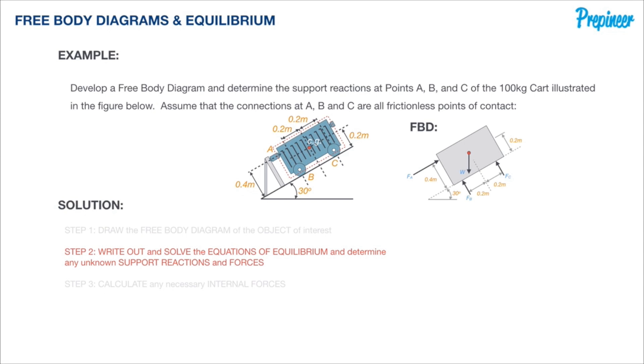Now we can go on to step two of our process where we will write out our equations of equilibrium and determine any unknown support reactions. For a two-dimensional problem, there's three equations of equilibrium: the sum of all the components in the X direction must sum to zero, the sum of all the Y components sum to zero, and the sum of the moments must equal zero.